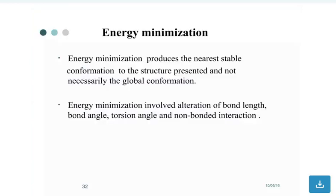Energy minimization: what does it mean? Energy minimization produces the nearest stable conformation to the structure represented and not necessarily the global conformation. Energy minimization involves alterations of bond length, bond angle, torsion angles, and non-bonded interactions.